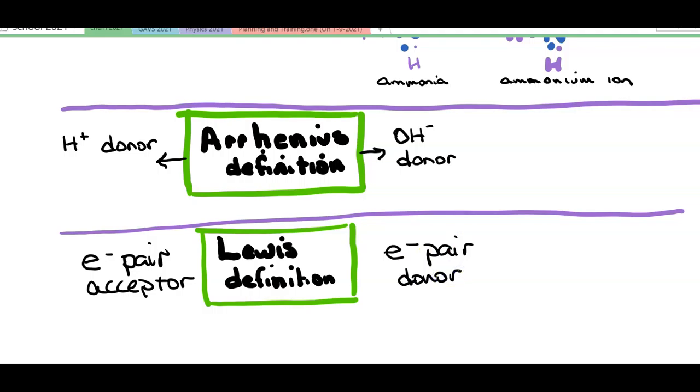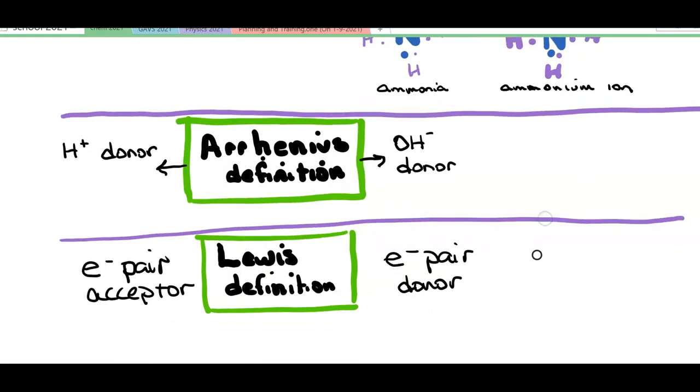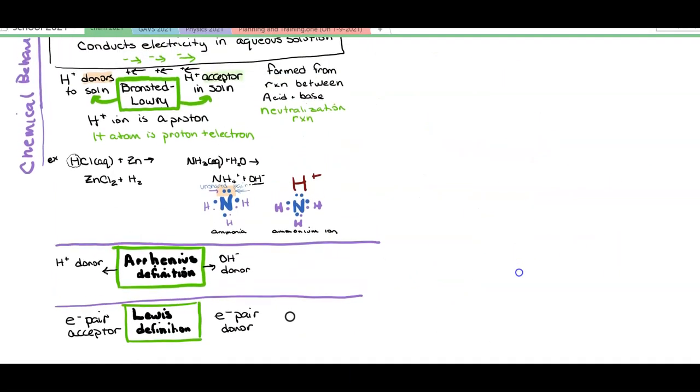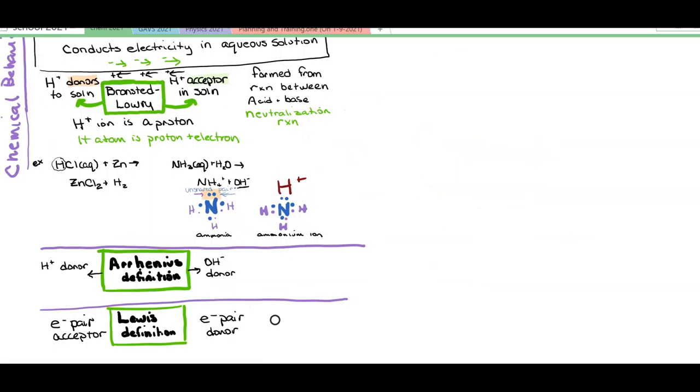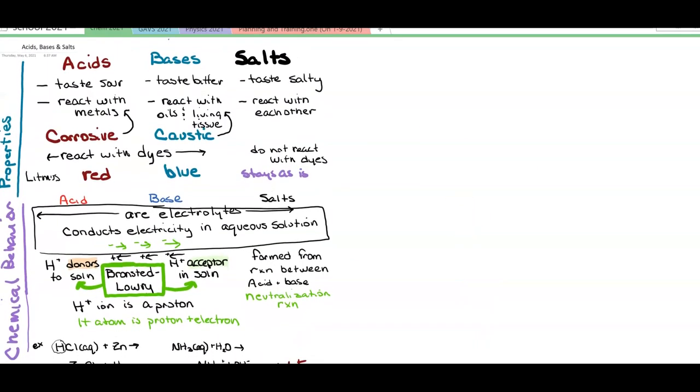And again we saw that in our ammonia to form the ammonium ion. So we had ammonia with an electron pair donating it. Hey hydrogen ion, come on proton, join in right here. And so those are our three definitions that are the chemical behavior to explain why these physical properties like tasting